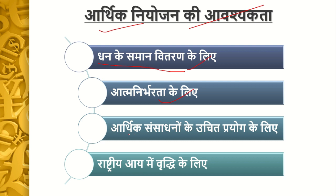Arthik Niyojan is necessary for the proper use of Arctic Sansadhan (economic resources). Because there are many different places and resources, they need to be used in a standard way. With limited sources, if there is no plan — for example, if you have a salary of 10,000 rupees and you don't plan how to spend it, you won't have food at the end of the month. So planning is needed to reduce waste and put resources in the right place. These are the 4 main points for the need of Arthik Niyojan.